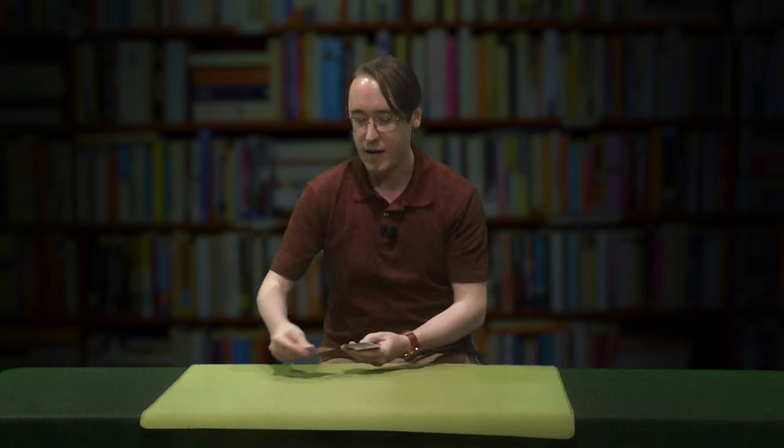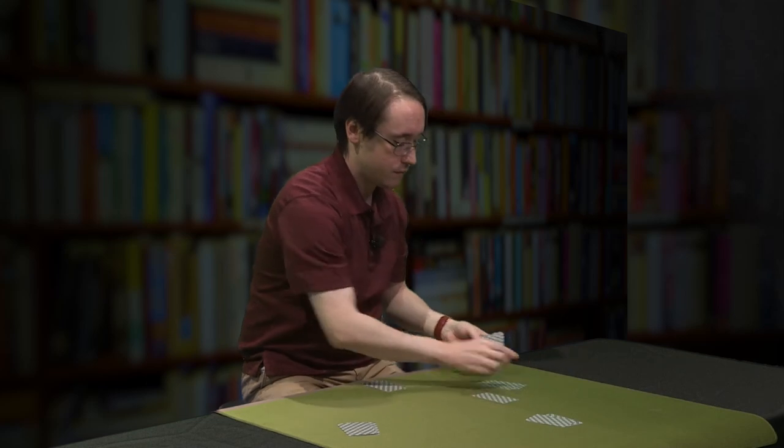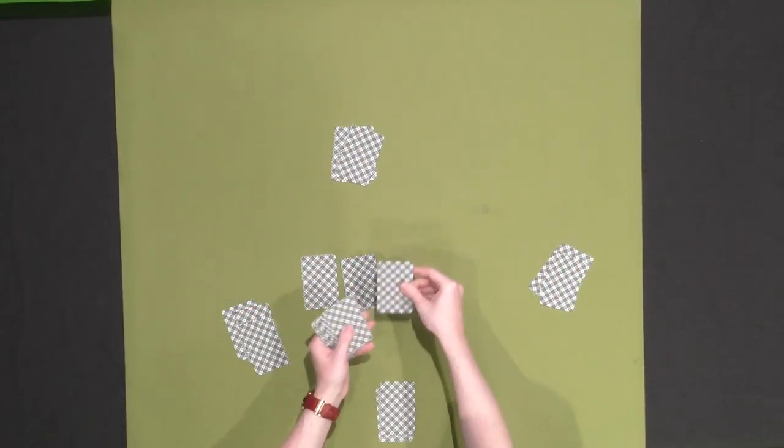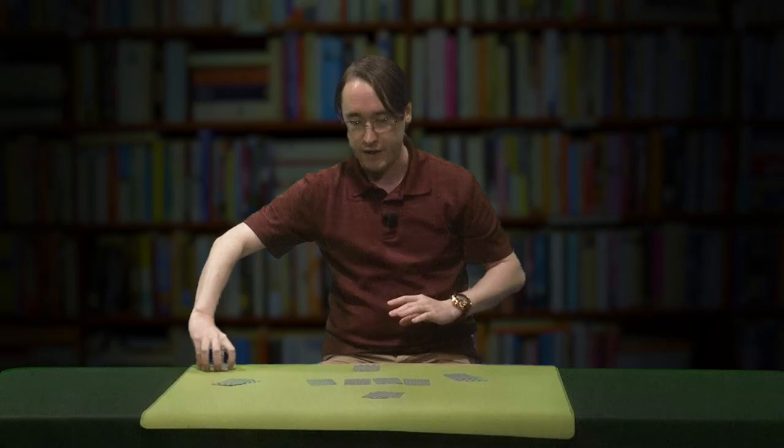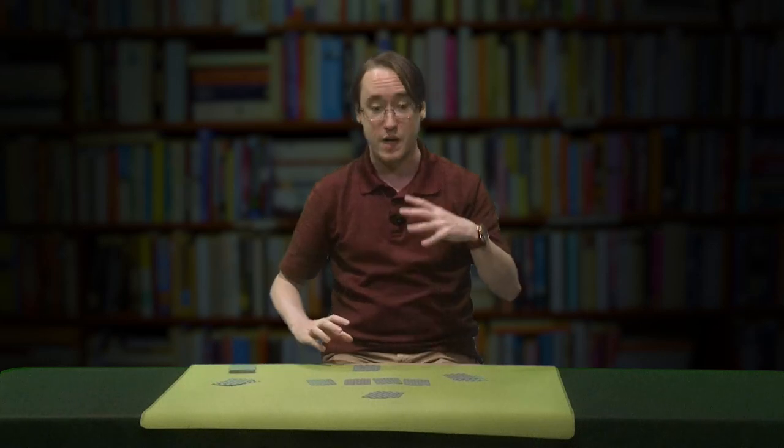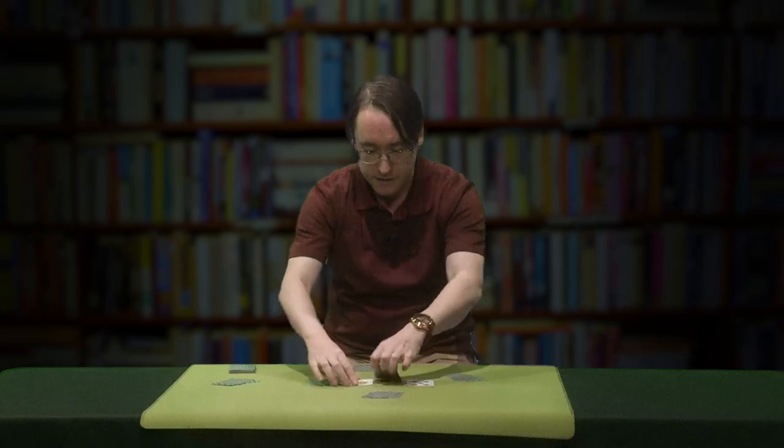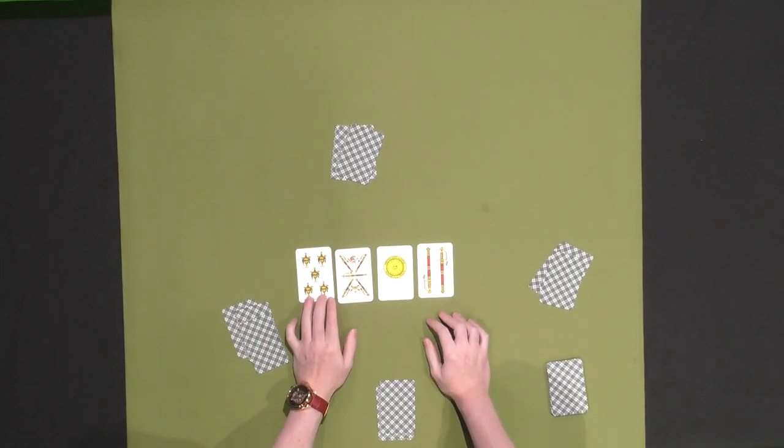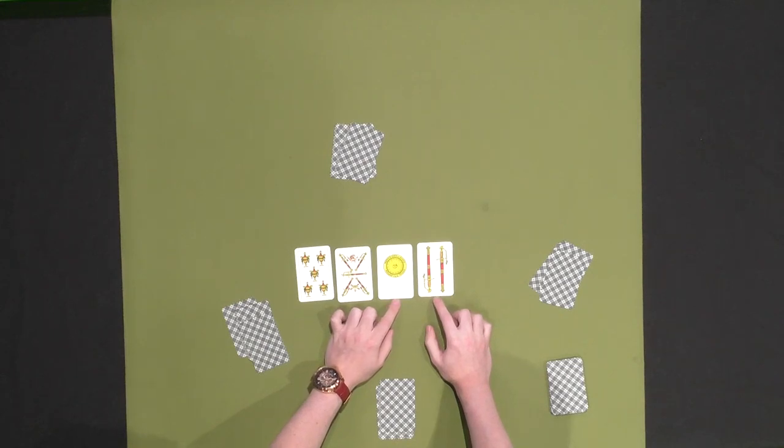That will be our field or pond if you want to make some Go Fish kind of references. So we're going to deal here. I'm going to put this stack over here. It's typically referred to as a stock. We're going to flip over here. So we have some fives going on. We've got five of cups, five of swords, one of coins and the two of swords.